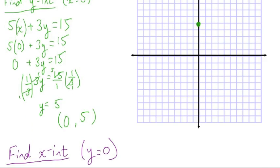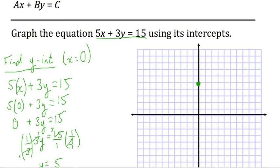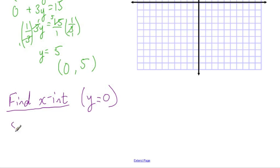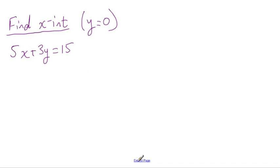And now again, I start with this equation: 5x plus 3y equals 15. And then I substitute in 0 for y so that I can find out what the x-coordinate is when the y-coordinate is 0. So I'm going to substitute in for y. So this is going to be 5x plus 3 times 0 equals 15.